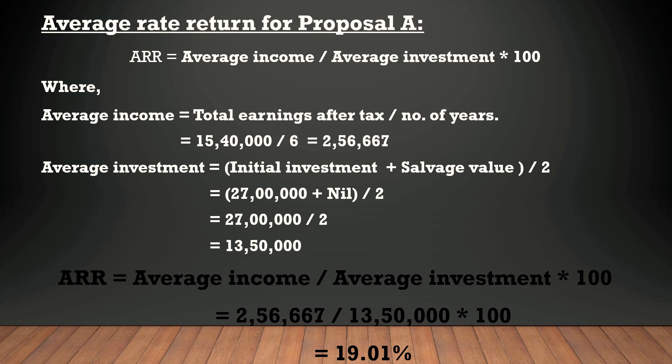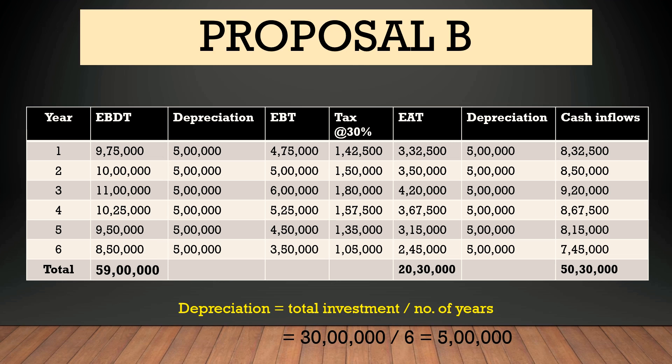So all three calculations — payback period, NPV, and ARR — are done for Proposal A. Now we have to calculate the same three things for Proposal B.